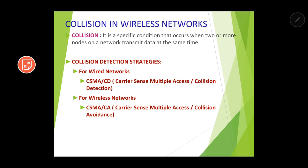Collision detection is very important. Collision detection happens only in case of wired networks. For wireless networks, we cannot detect the collision because it is a half duplex method of communication. Therefore, what is done here is we will try to avoid collision, so the method applied on wireless networks is CSMA/CA.